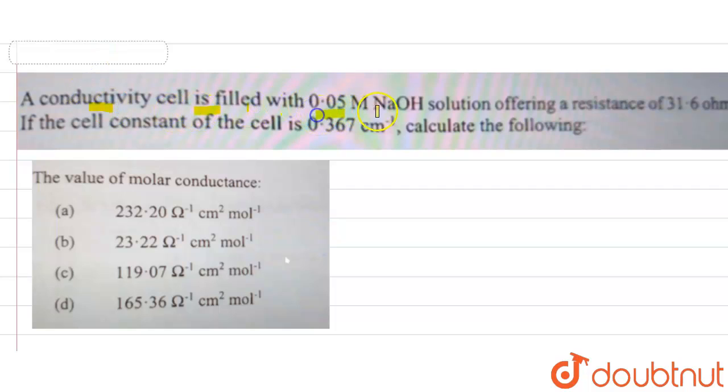A conductivity cell is filled with 0.05 molar NaOH solution offering a resistance of 31.6 ohm. Cell constant value is 0.367. I need to find the value of molar conductance.